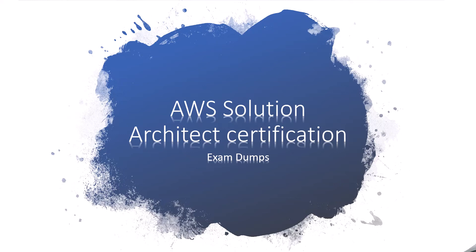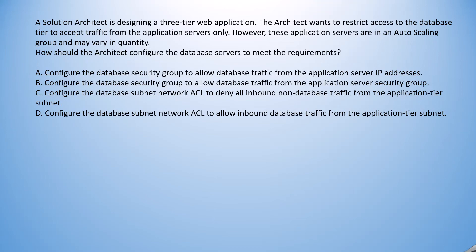Let's jump on the question. A solutions architect is designing a three-tier web application. The architect wants to restrict access to the database tier to accept traffic from the application servers only. The hint here is that we need to provide access for application servers only; however, these application servers are in an auto scaling group.